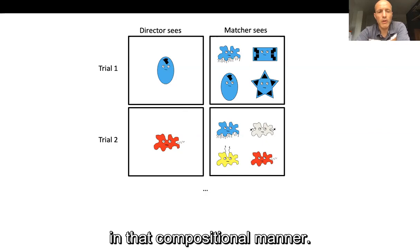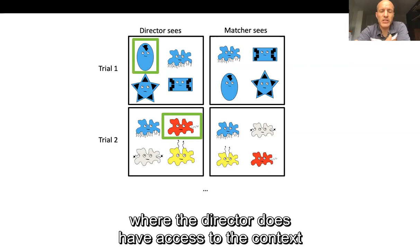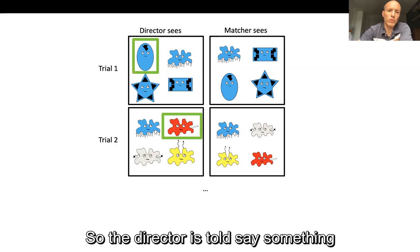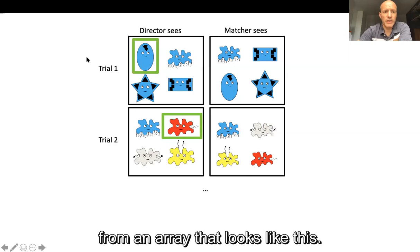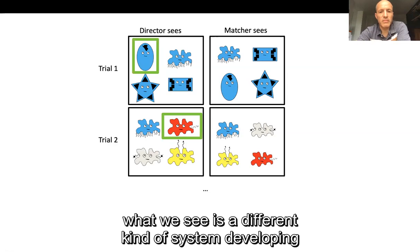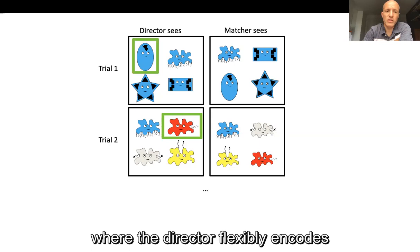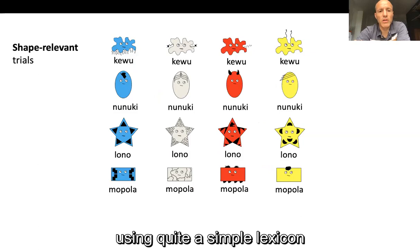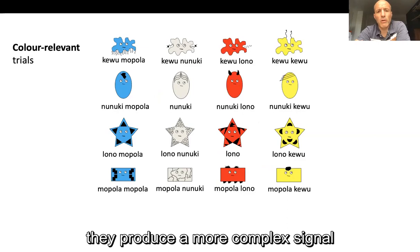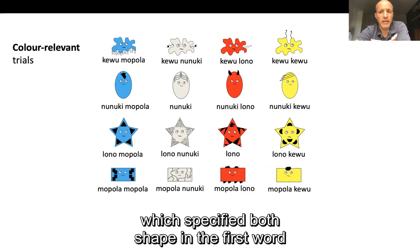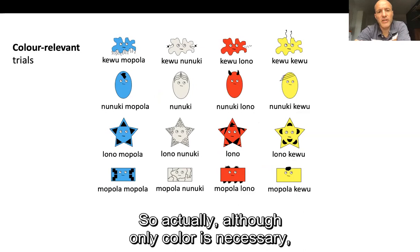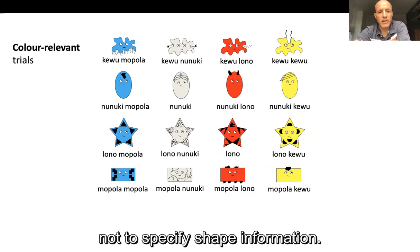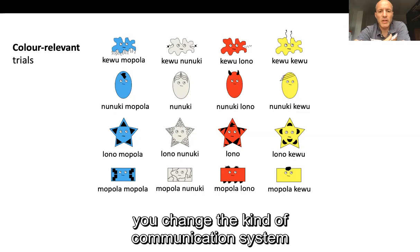James also ran a condition where the director does have access to the context in which their utterance is going to be interpreted. In that circumstance, a different kind of system develops during interaction, where the director flexibly encodes different kinds of information depending on the context. In shape-relevant trials, directors just encode shape information using a simple lexicon. In colour-relevant trials, they produce a more complex signal — two words specifying both shape and colour. So if you change the fine-grained details of the communicative task, you change the kind of communication system that participants converge on.